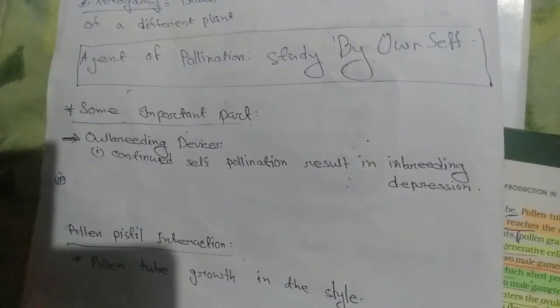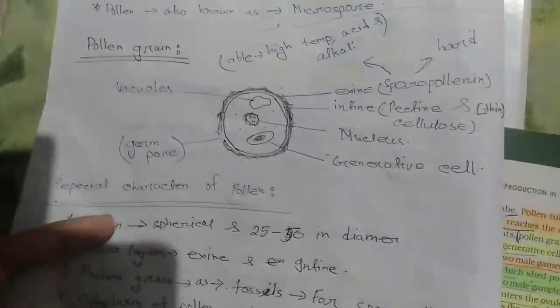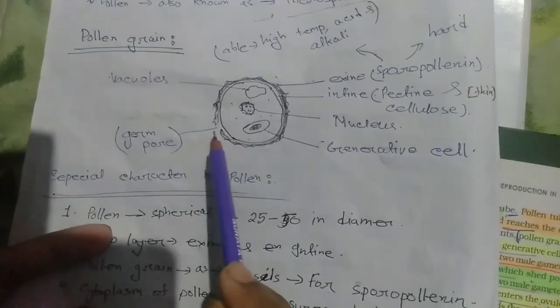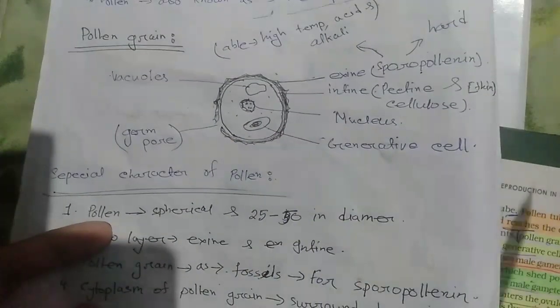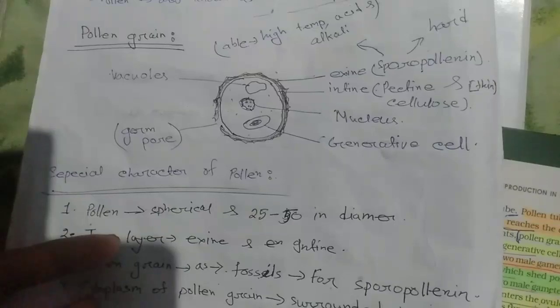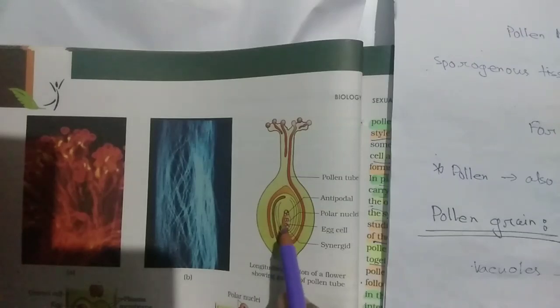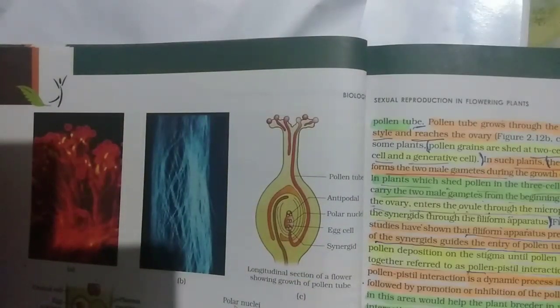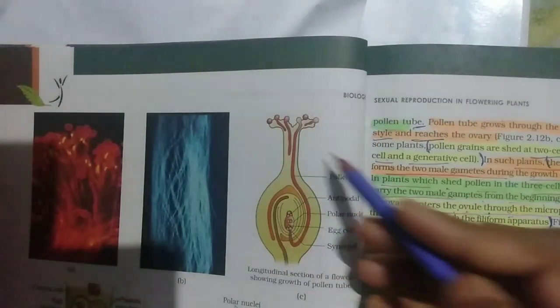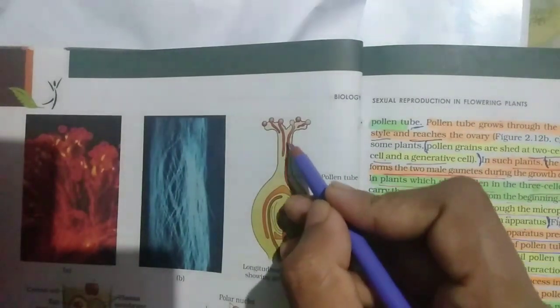When we study pollen grain, a pollen has a germ pore which helps the genetic material come out. From this germ pore, the genetic material comes out and goes into the embryo sac through the pollen tube.